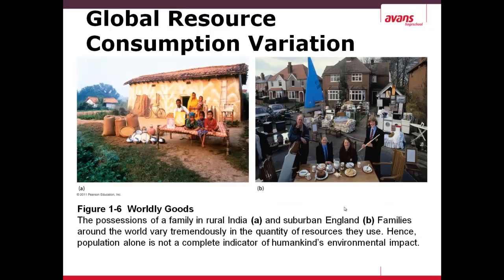The global resource consumption varies throughout the globe. On the left-hand side you have a family in rural India with all of their possessions outside of their house, and their house is not too huge. On the right-hand side, you see a picture of an English family in the suburbs, and their resource usage is considerably higher — two cars, a much larger house, a lot of electronics, clothes, furniture, etc. — while the Indian family has basically one bed, a bicycle, some pots and pans, and grains.